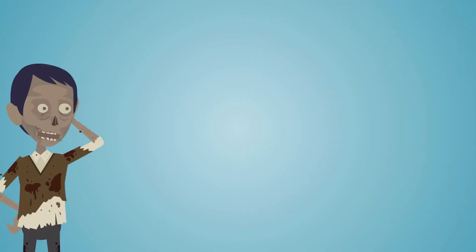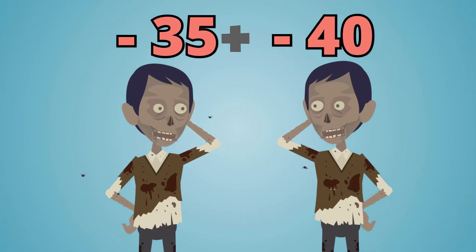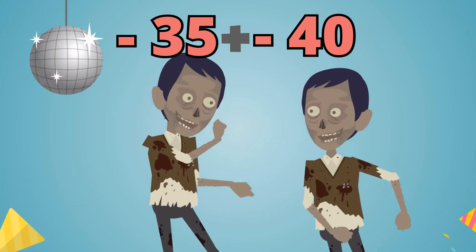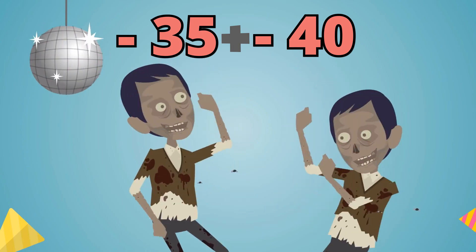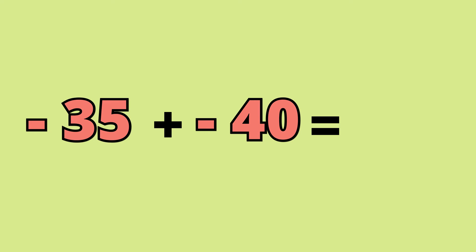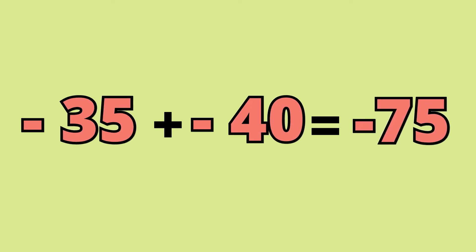However, when we're adding negatives with negatives such as negative 35 plus negative 40, we have to combine both numbers and keep the sign. Negative 35 plus negative 40 is equal to negative 75 because we cannot form any zero pairs.